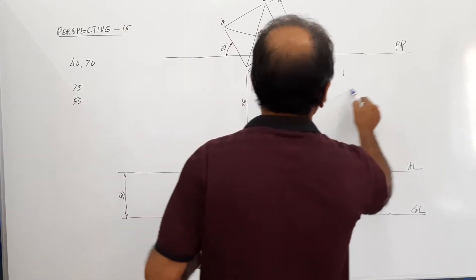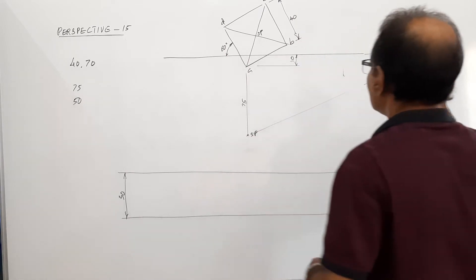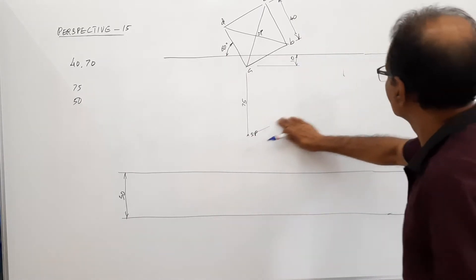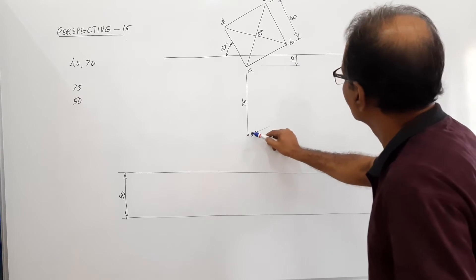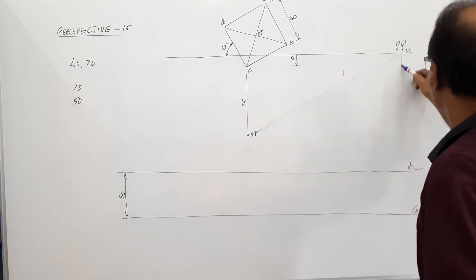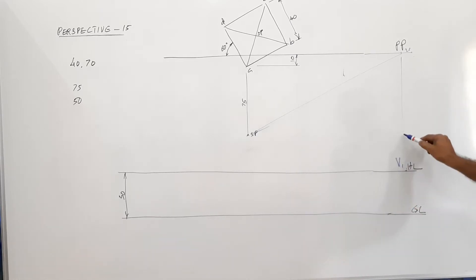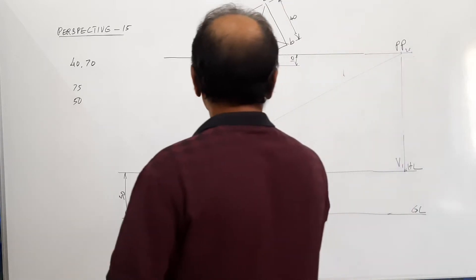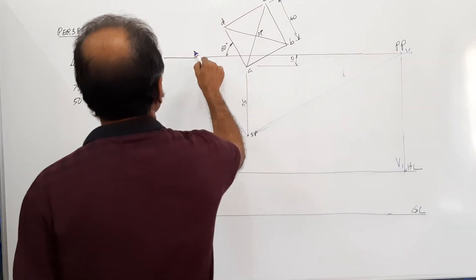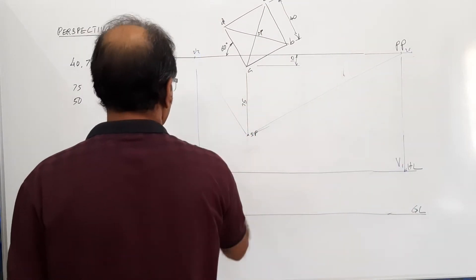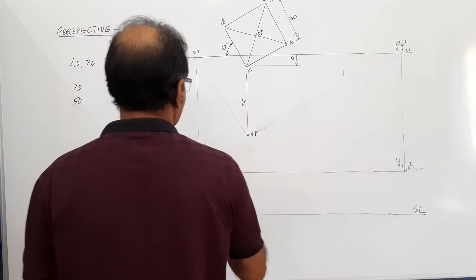I draw the vanishing point of side AB. I locate the vanishing point of side AB, capital V1. And AD, capital V2.